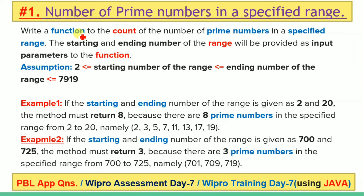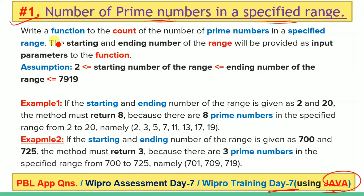Hello everyone, today we are going to discuss the first question of day 7 using Java. The question is to count the total number of prime numbers in a specified range. Here we have to write a function that will count the total number of prime numbers in a given specified range.